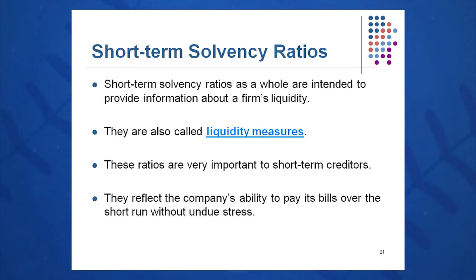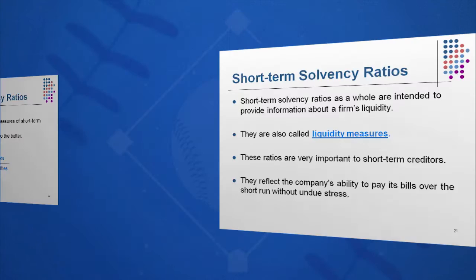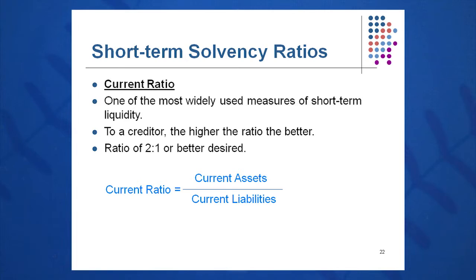Short-term solvency looks at the company's ability to pay their bills quickly. The current ratio is very important — one you must memorize for life. It's current assets divided by current liabilities, both found on the balance sheet. A ratio of 2 to 1 is desired. Some authors say 1 to 1, but 2 to 1 is preferable because it gives a little bit of a buffer.